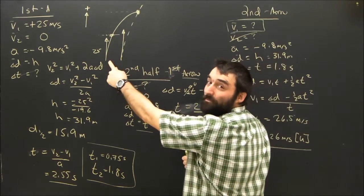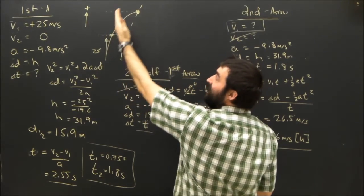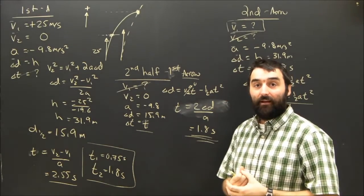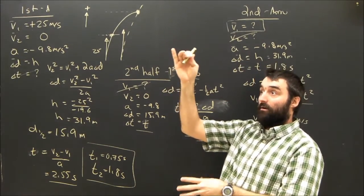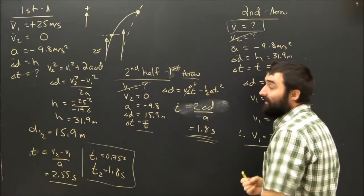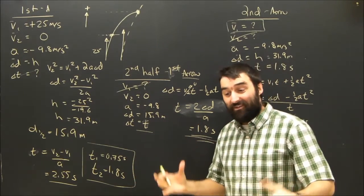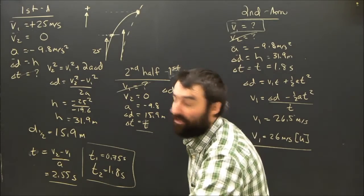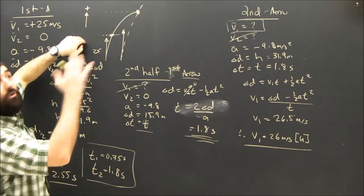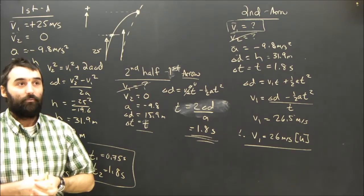It actually only took about 0.75 seconds for the first half, whereas the second half took 1.8 seconds. The arrow was going much more quickly during the first half — starting at 25 m/s and slowing down. In the second half it was going much more slowly, so it took more time. Basketball players appear to hang in the air near the top of a dunk for exactly this reason. Don't assume that half the distance means half the time — that's a good way to invite mistakes.